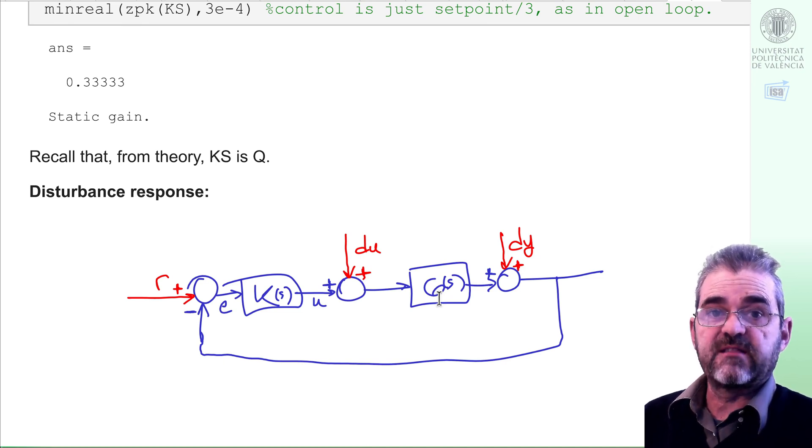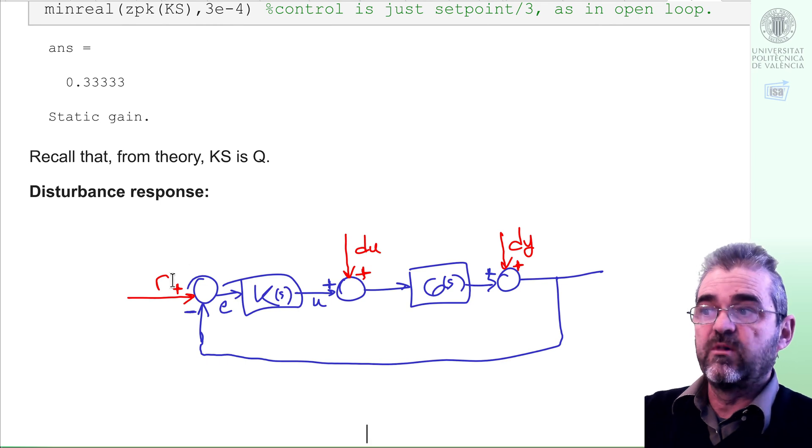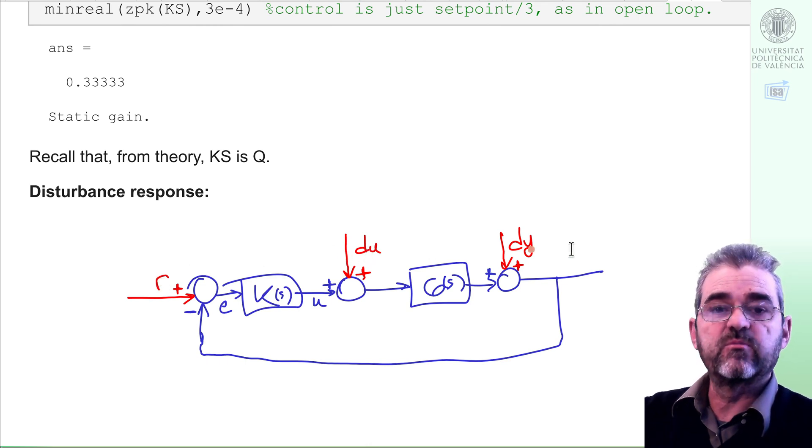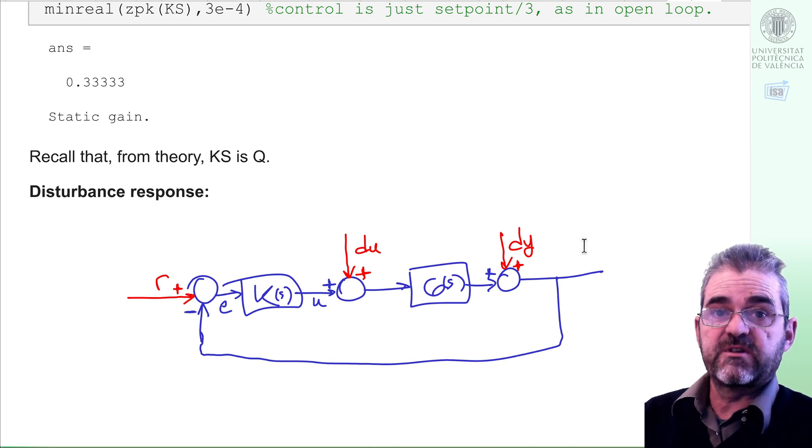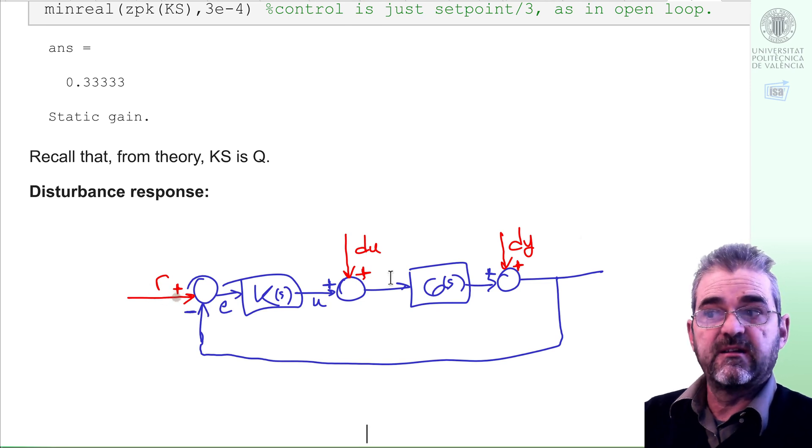We converted that to a standard regulator, which in this case had a PID form because the plant was second order. And as it had integral action, we discovered that the settling time to all these three inputs—setpoint, input and output disturbances—was around 1.5 seconds we were happy with. And of course, due to the integral action of the controller, the error was zero both in setpoint tracking and in disturbance rejection tasks. So we finish with this. Thanks for watching.